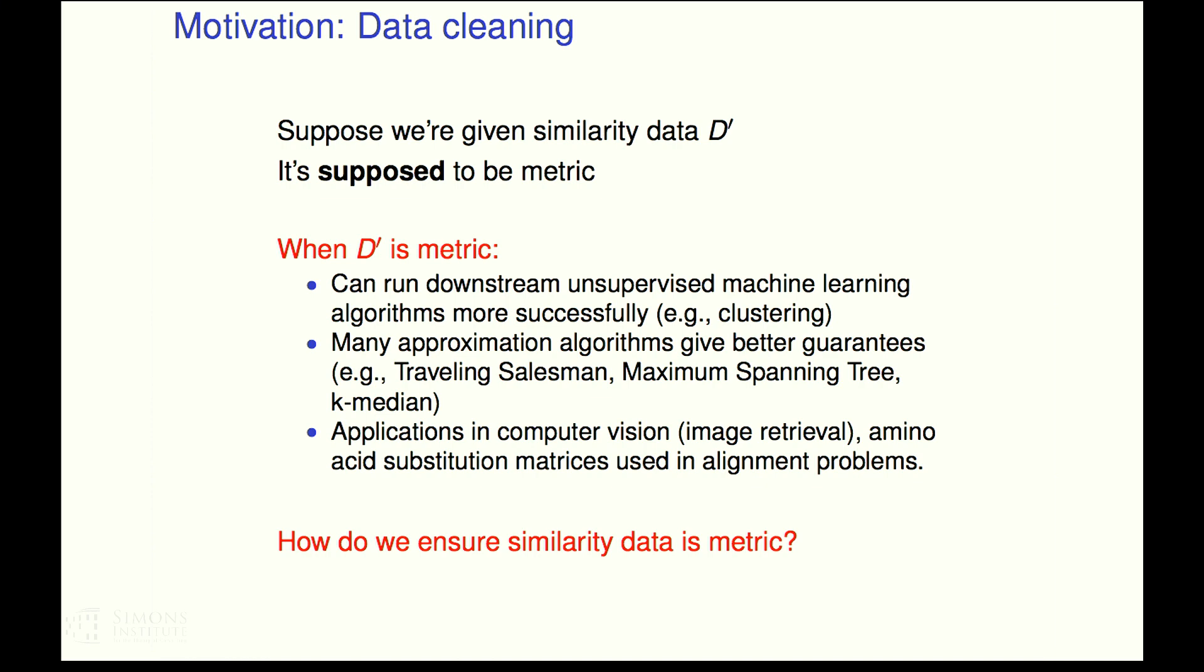And when your data come from a metric, then all kinds of other algorithms get much, much easier. So you can run downstream all kinds of nice unsupervised machine learning algorithms. For example, clustering. Lots of approximation algorithms give better guarantees when your data come from a metric. There are applications in computer vision and in bioinformatics like amino acid substitution matrices that are used in alignment problems.